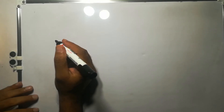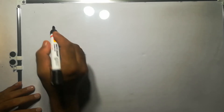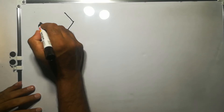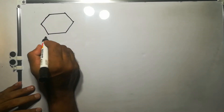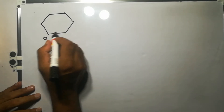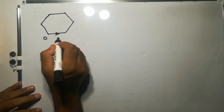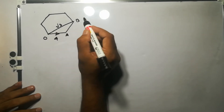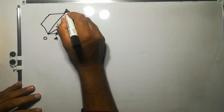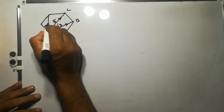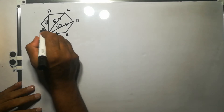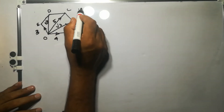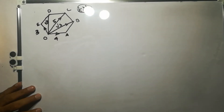Let us find out the magnitude of resultant forces acting on a regular polygon. As an example, let us consider one regular hexagon. That means all the sides of the hexagon will be equal, and from a point O, five forces are acting: 4 kN from O to A, √3 kN from O to B, 5 kN from O to C, √3 kN from O to D, and 3 kN from O to E. These are the forces acting on the regular hexagon, all in kN.